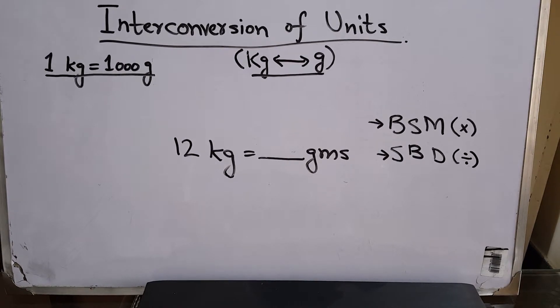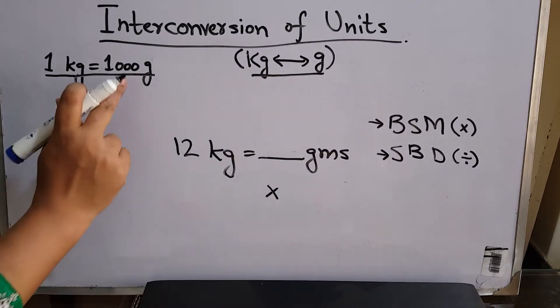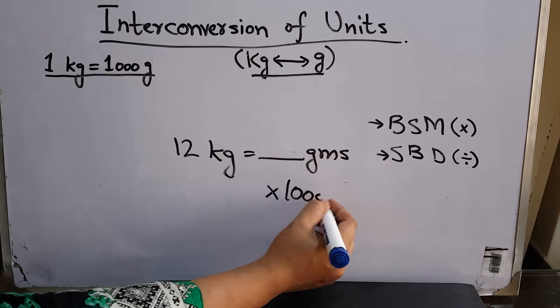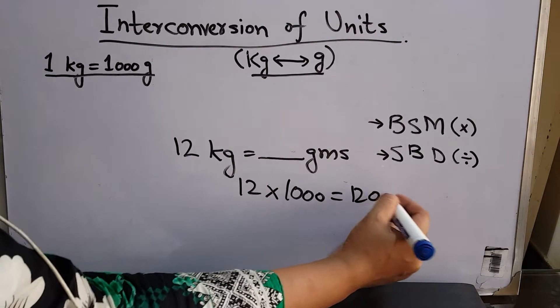For this one, how many grams are there in 12 kg? You already know you're going from bigger to smaller units, so you multiply. Multiply 12 by 1,000, which gives you 12,000. So there are 12,000 grams in 12 kg.